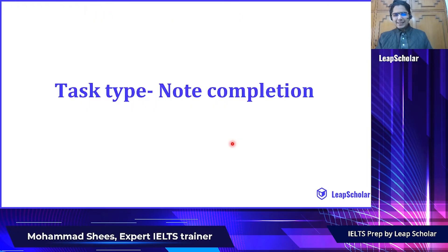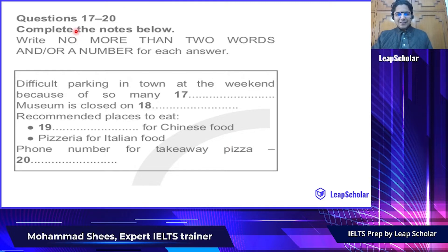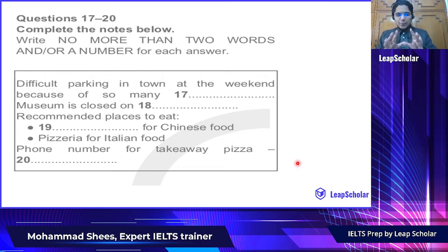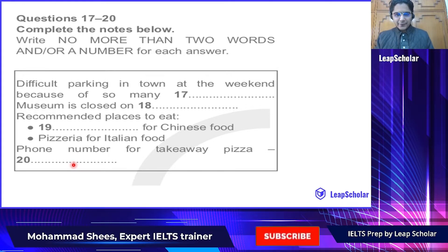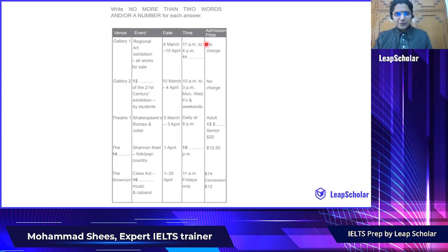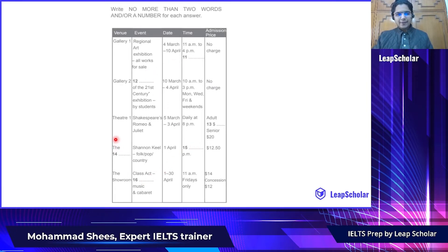Let's look at Note Completion Task. The idea is pretty simple. This is a task in front of you — write no more than two words and/or a number for each answer. These are complete notes, but in the blanks you will have to fill the words or a number by listening to an audio. Now there is a Table Completion Task. There is a complete table and you will have to listen to the audio and write down the words or a number if asked.